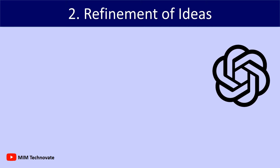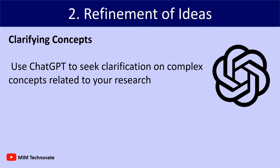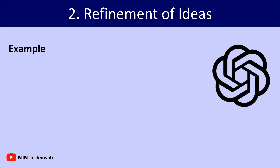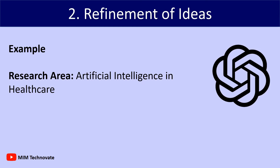Number 2: Refinement of Ideas — Clarifying Concepts. Use ChatGPT to seek clarification on complex concepts related to your research. The model can provide simplified explanations, helping you refine and better articulate your initial ideas. For example, the research area is artificial intelligence in healthcare.